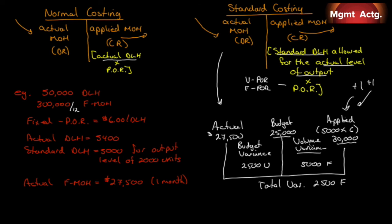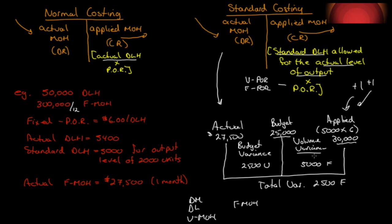The volume variance has something to do with the utilization of our facilities, not the cost of our facilities. That can be tricky — for direct materials, direct labor, and variable manufacturing overhead, both variance cells meant something meaningful. But for fixed manufacturing overhead, the second cell — the volume variance — doesn't measure spending; it measures utilization. The budget variance means something; the total means something. But the volume variance is just a measure of facility utilization.